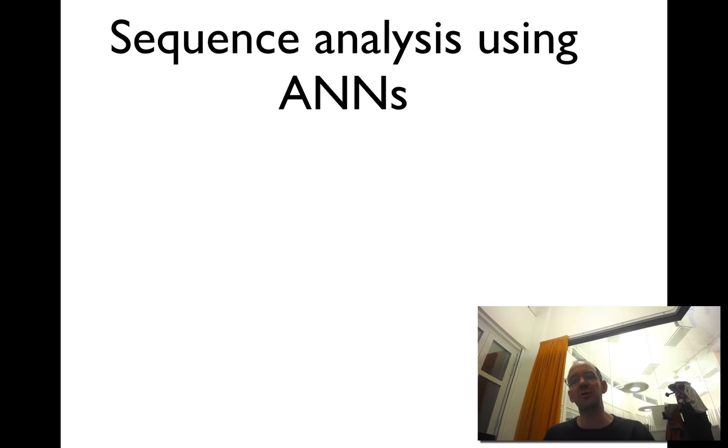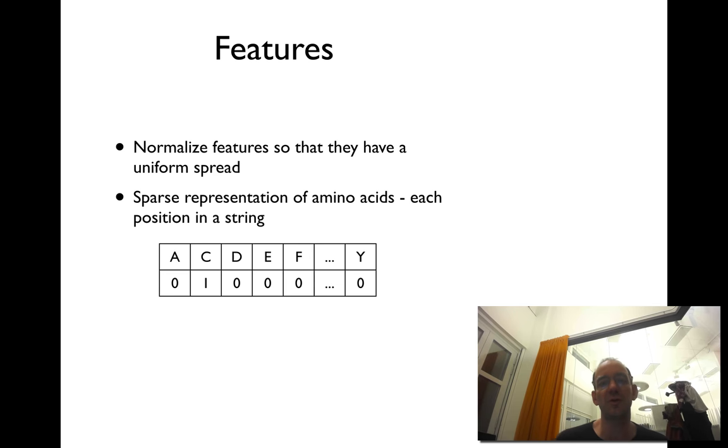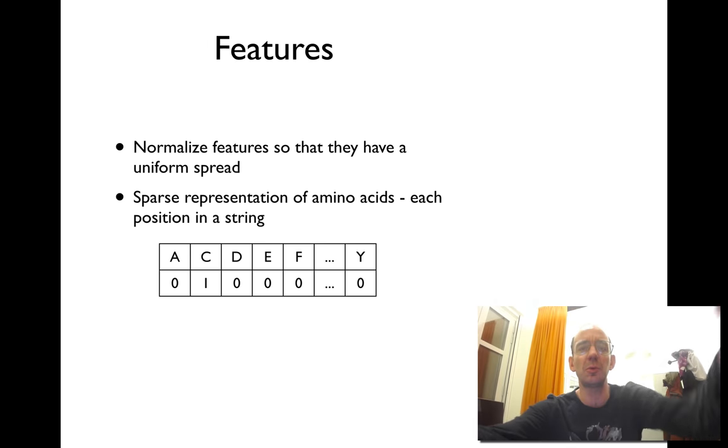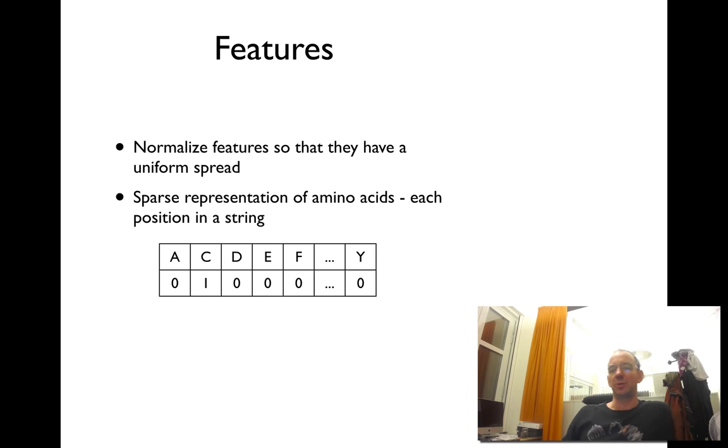So how can you do sequence analysis using artificial neural networks? First of all, you need to represent the sequence in a format that the network can recognize. And a common way to do it is actually very simple. It's called sparse encoding.